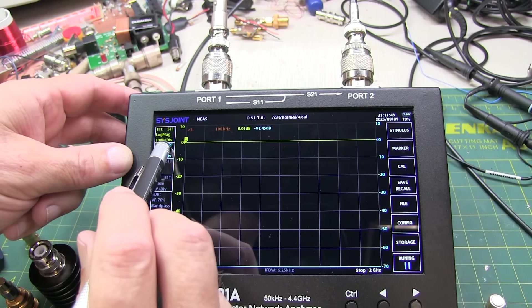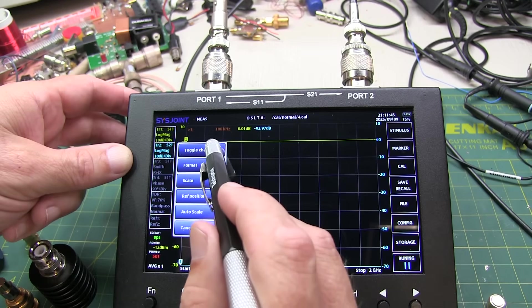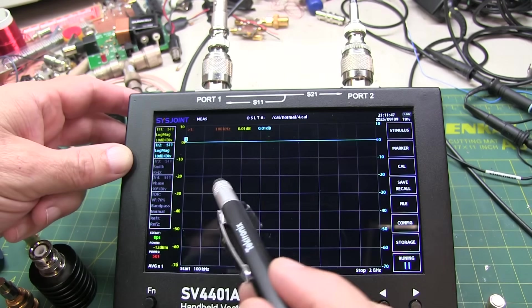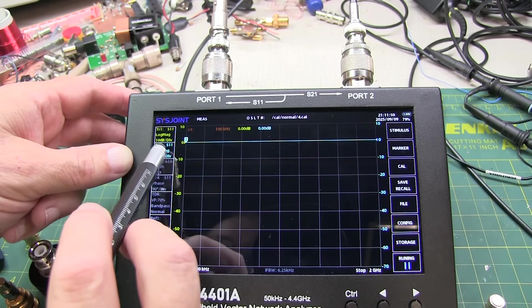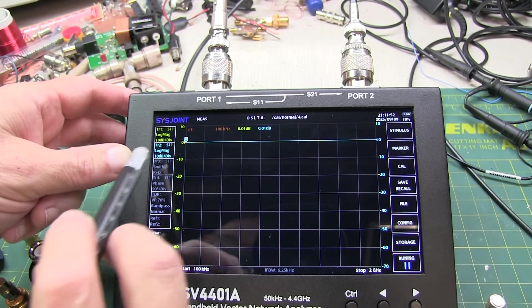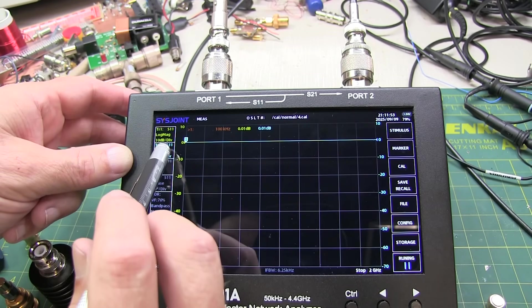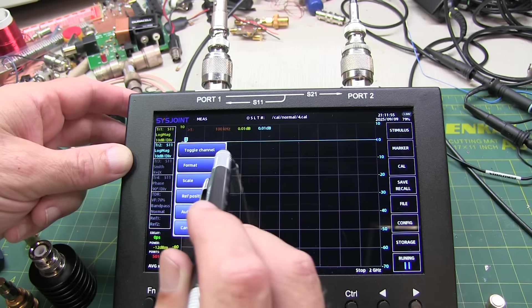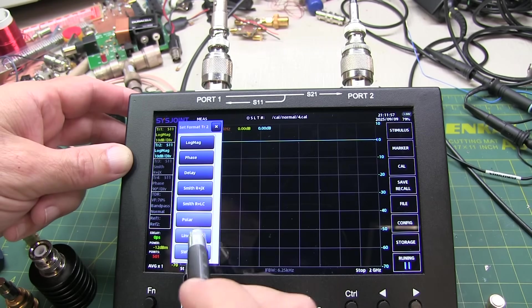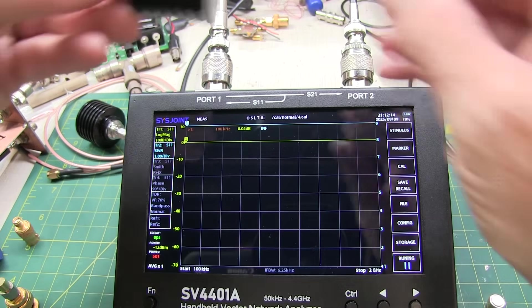But I'm going to touch and hold on trace 2, and I'm going to toggle its channel to put it onto channel 1. So now it's also showing, right now, log mag of S11, just like trace 1 is. I'm going to change the format of that to be SWR. Okay, those traces are set up.